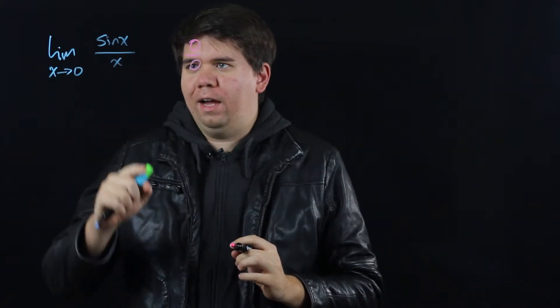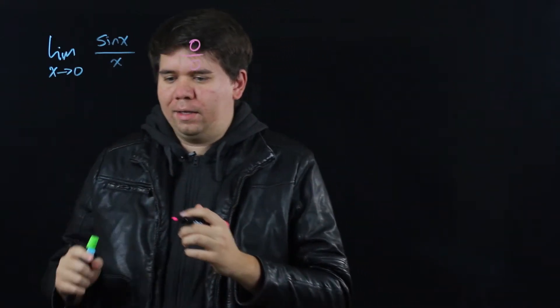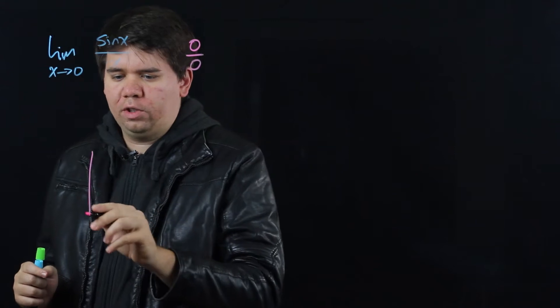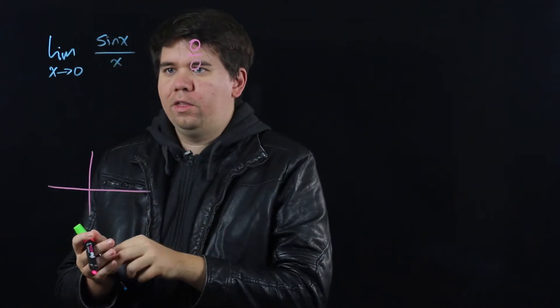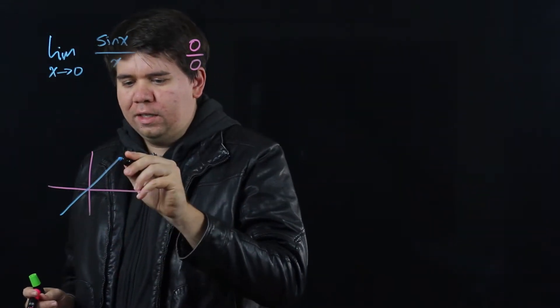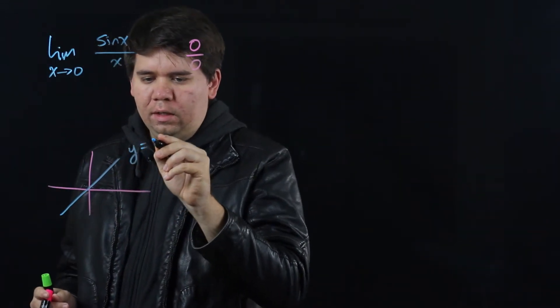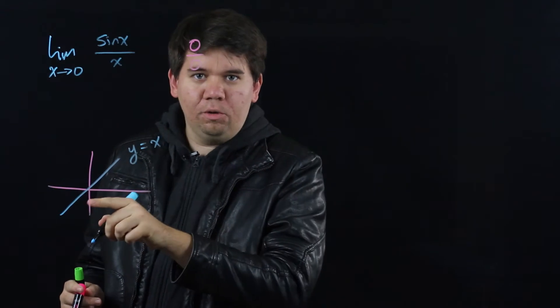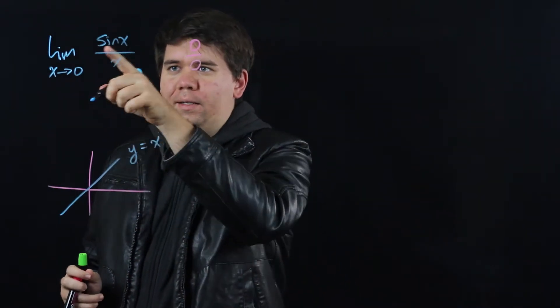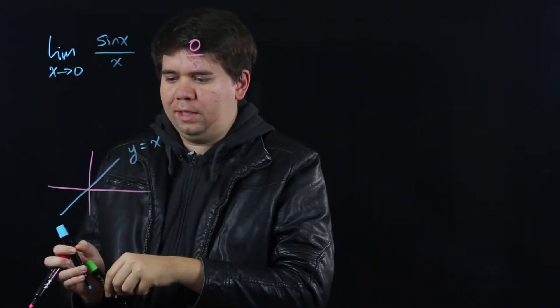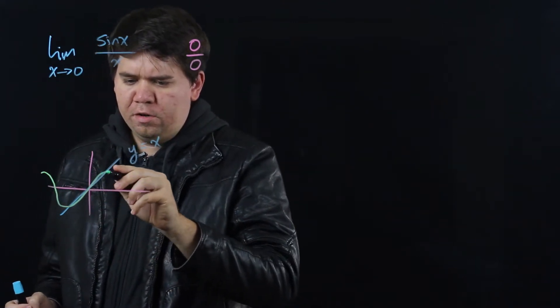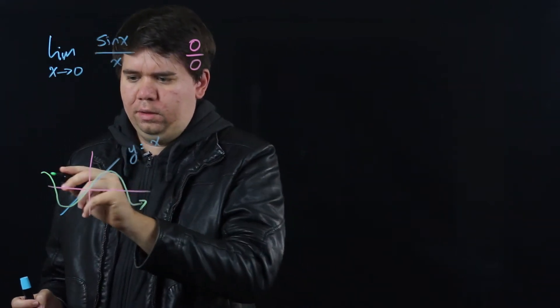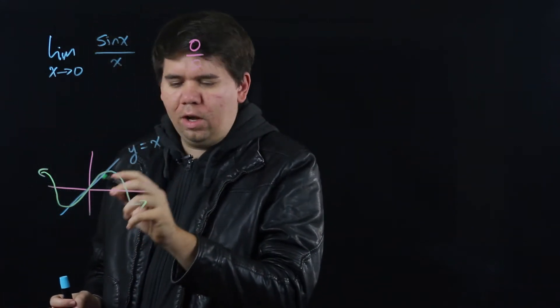You might look at the graph of sine of x and x to try and get some intuition of what's going on here. When you're close to 0, the graph of y equals x is just a line with slope 1. And the line of y equals sine of x, well that's periodic, but close to 0 it's also a line.